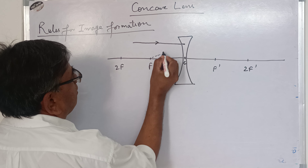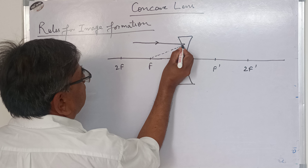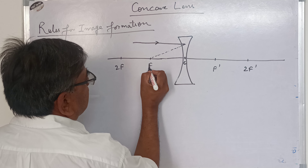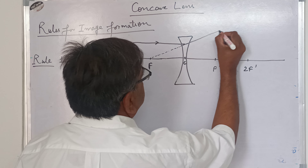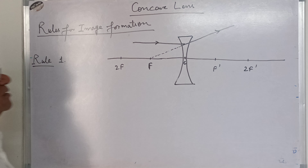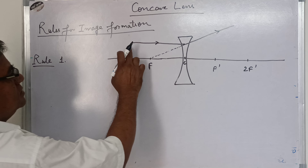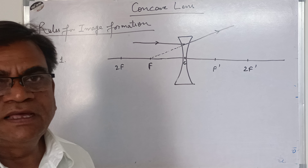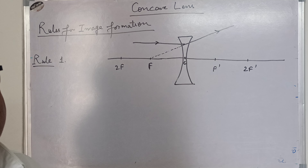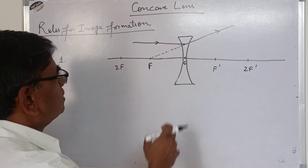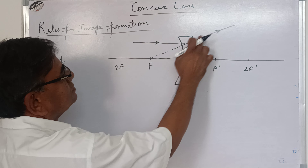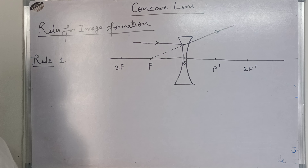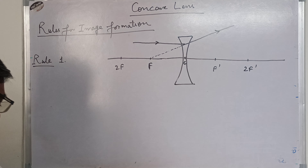This is the path of the refracted ray. This is the incident ray and this is the refracted ray. Rule 1 says: an incident ray parallel to the principal axis, after refraction, goes along the line which passes through the focus — not through the focus itself, but along the line which passes through the focus.